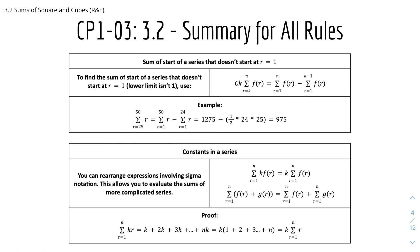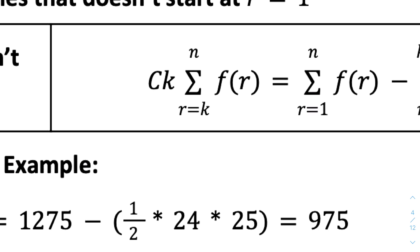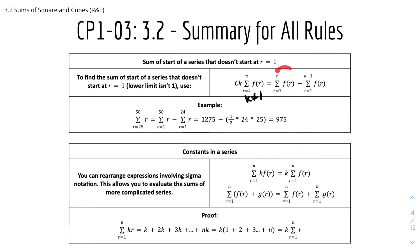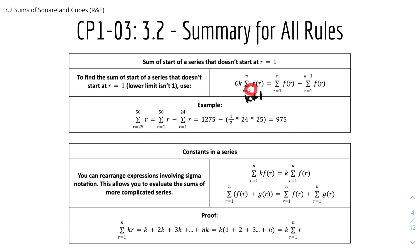Here we have the rule for a sum that doesn't start at r equals 1 — where the lower limit isn't 1. To handle this, we split it into two sums both starting from r equals 1: the sum from 1 to n, minus the sum from 1 to (k minus 1), where k is the original lower limit and is a positive integer.